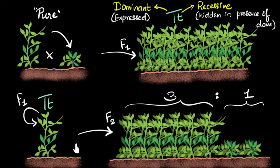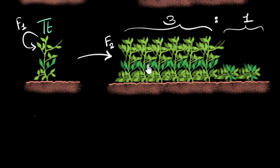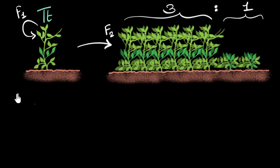The next question is: how do we explain this? Why is it that when we self-pollinate this F1 plant, we get both tall and short plants? And why do we get them in that same three-to-one ratio? To answer this question, Mendel comes up with another law — the law of segregation.